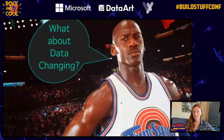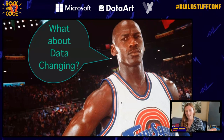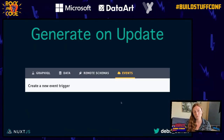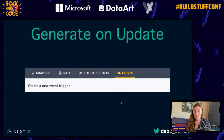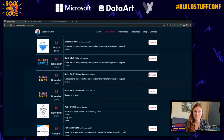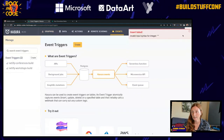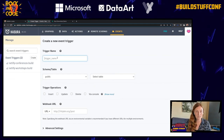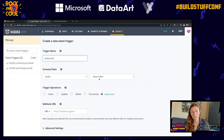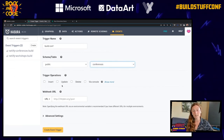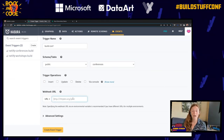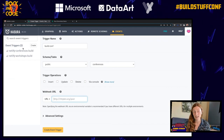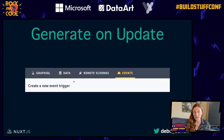What about data changing? You can do that by creating an event trigger in Hasura. Go into Events, then Event Triggers, press Create, put in a name like 'build_conf', select the conferences table, choose on insert, on update, or on delete, and put in the webhook URL from Netlify. The build hook from Netlify — you just go into Build Hooks in Netlify, put in a name, select the branch as master, press Save, and you get a URL. You put that URL into the webhook URL in Hasura.